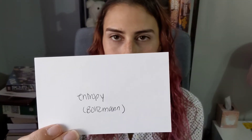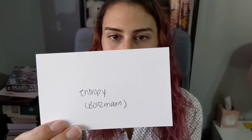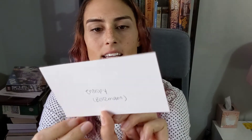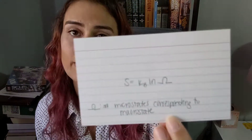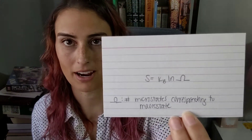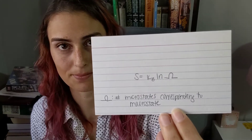The Boltzmann definition of entropy is S equals k_B log omega, where omega is the number of microstates corresponding to the macrostate.